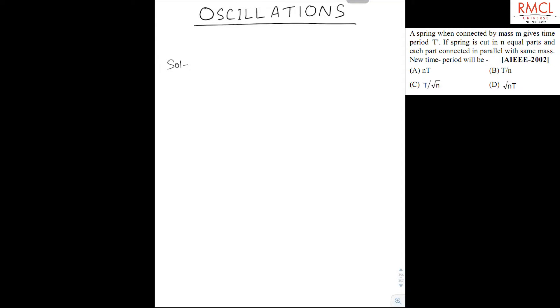As we know that spring constant of spring is inversely proportional to length of spring. So new spring constant for each part is given by K' equal to NK, where K is the spring constant of whole spring.